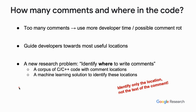Comments are super useful, but how many comments should we write and where in the code should they be? Having too many comments would waste a lot of developer time, and over time some of these comments could fall out of date. Therefore, it would be cool if we can guide developers towards the most useful locations for comments. For this, we propose a new research problem, which is identifying where to write comments.